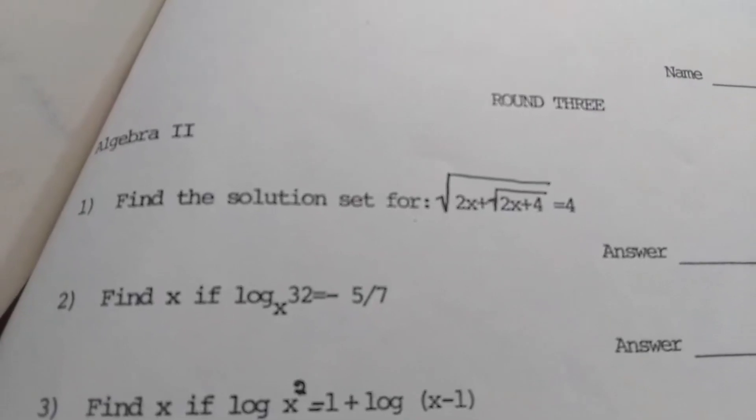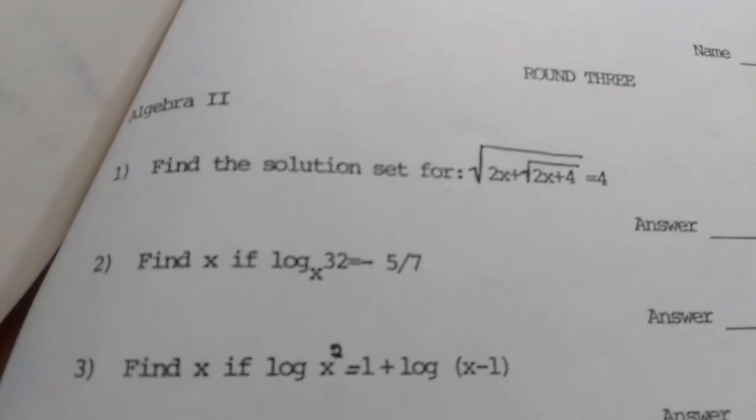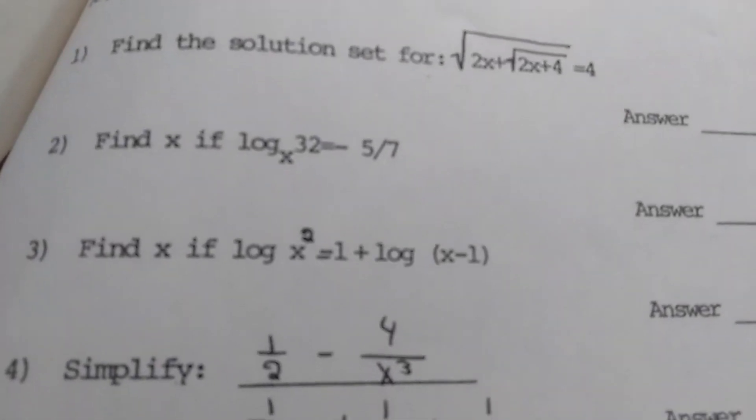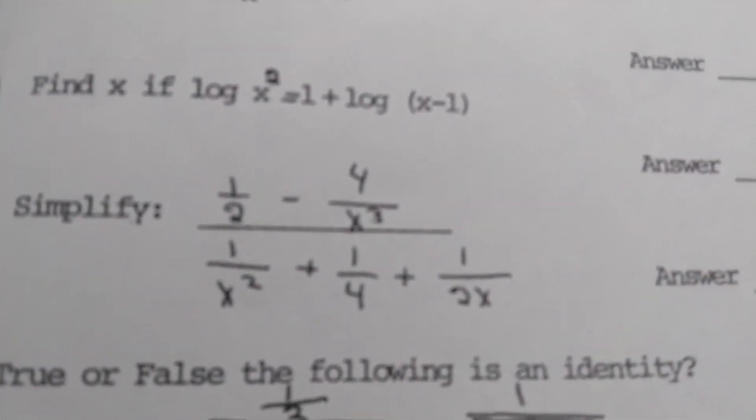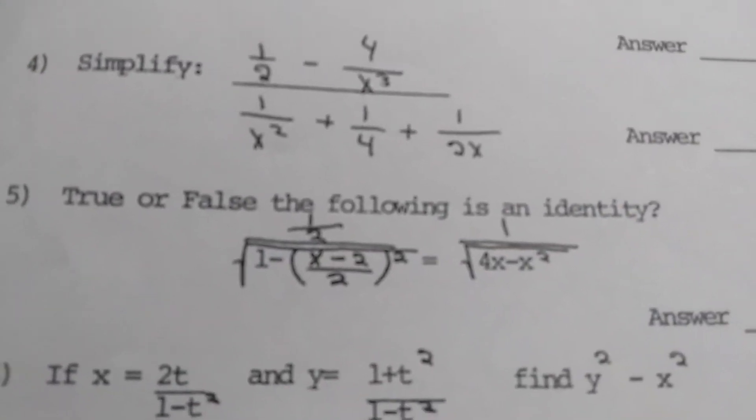And it looks like this is the last round. Find the solution set. Okay, so we have a nested radical. Finding x. Something simple with logs. Something else here with logs. That is all handwritten. There's no typing. There's no typesetting. And another true-false question.